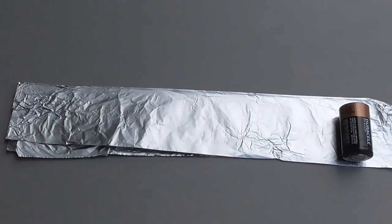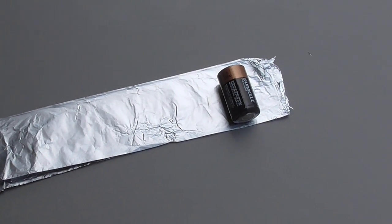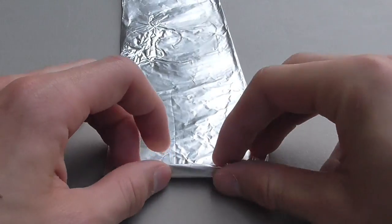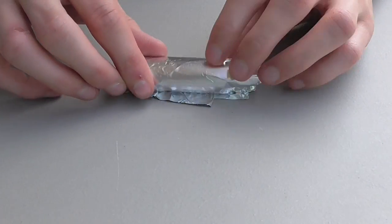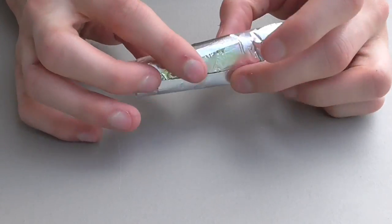You should now have a thin strip of foil that's slightly taller than a D battery. Pick an end and start to loosely roll up your foil strip. Once finished, you should have a tube of foil that looks about like this.